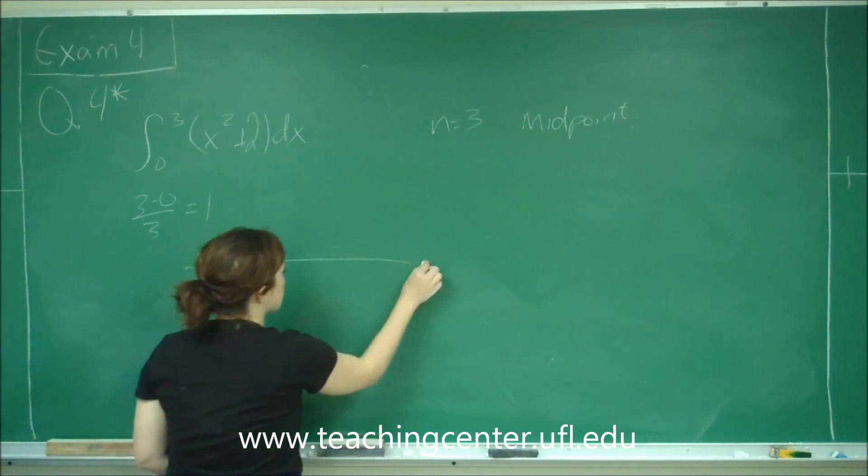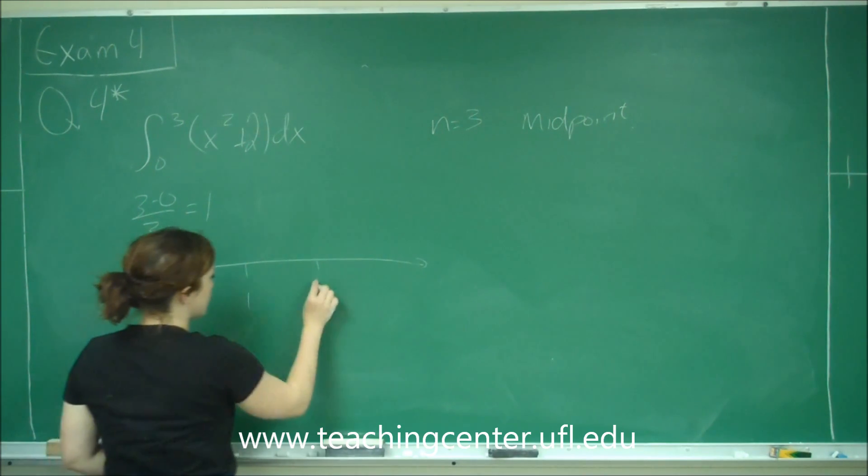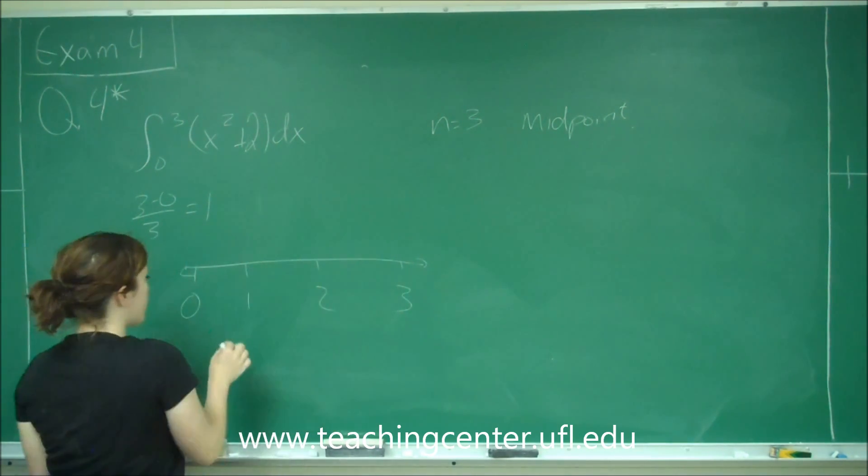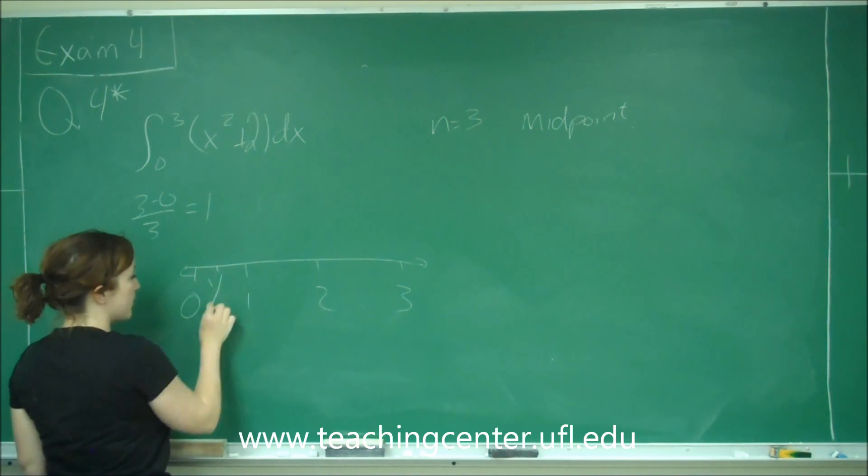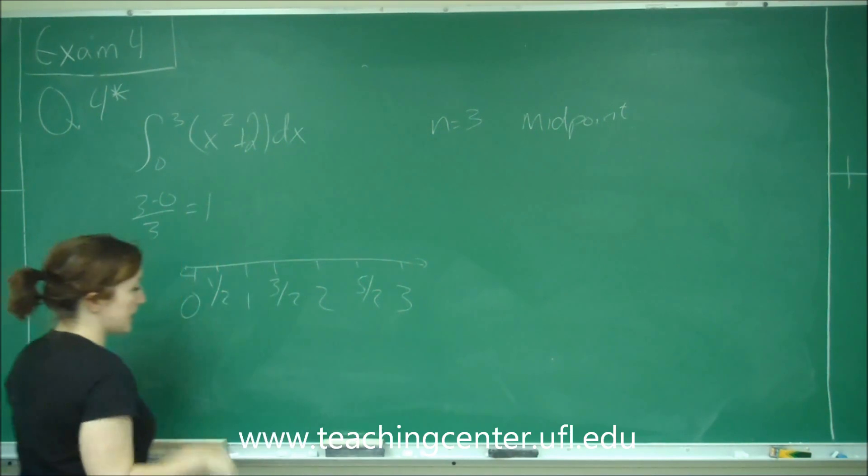If you think about it on the number line, we start at zero, then go one, two, three. These are our three chunks, but we're wanting the midpoint, so we have to go to the midpoint: one half, three halves, and five halves are going to be our x values.